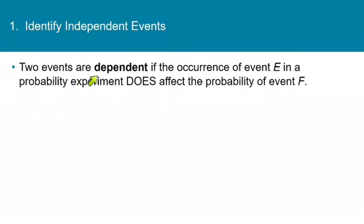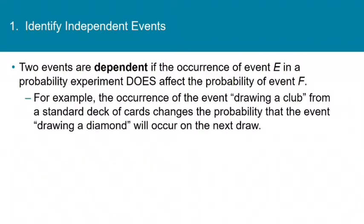Two events are considered dependent if the occurrence of event E in a probability experiment does affect the probability of event F. For example, the occurrence of the event drawing a club from a standard deck of cards does change the probability that drawing a diamond will occur on the next draw, because drawing a club affects the proportion of diamonds to the rest of the deck.